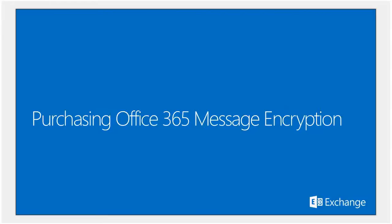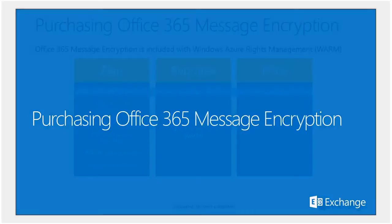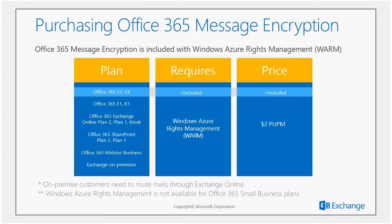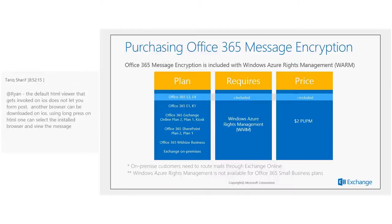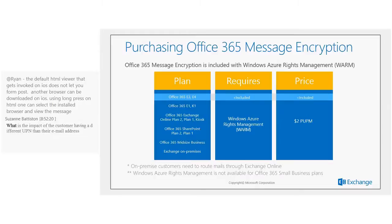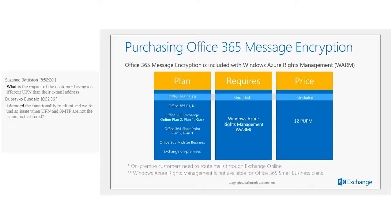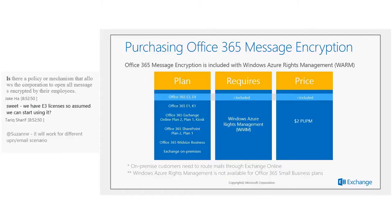Office 365 Message Encryption is no longer sold as a standalone like Exchange Hosted Encryption was. Going forward, it is included with Windows Azure Rights Management, which also provides traditional RMS template capabilities such as 'Do Not Forward' or 'Company Confidential' for intra-company communication. Including Office 365 Message Encryption with Windows Azure Rights Management means you get both internal and external encryption capabilities, and the price is not being increased.